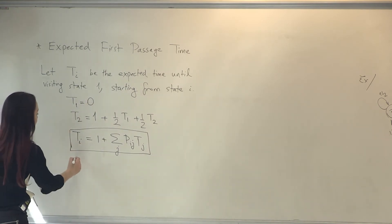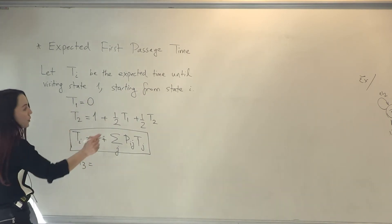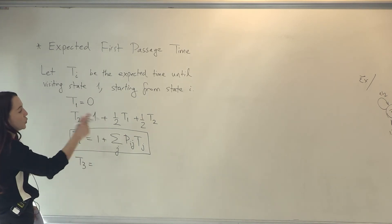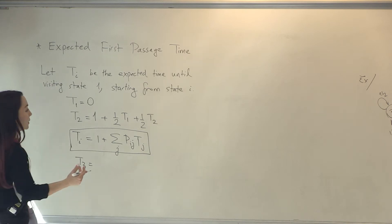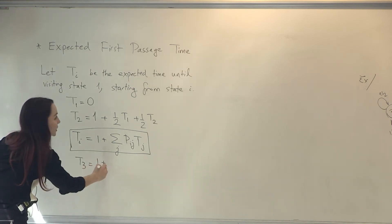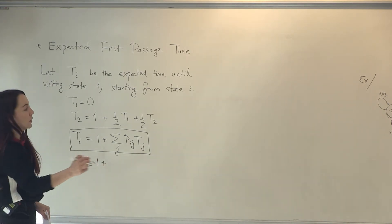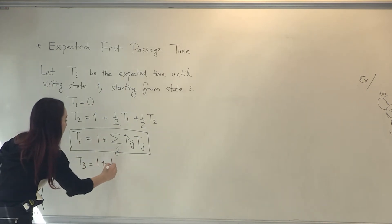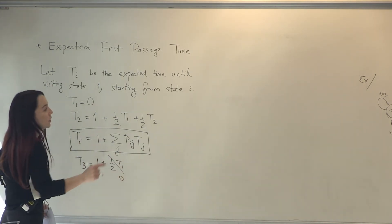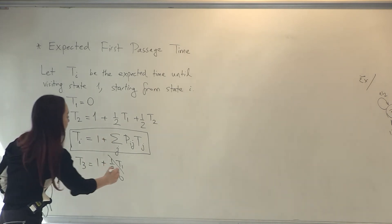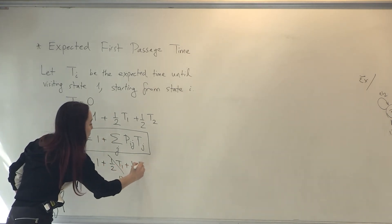For example, T3 in our example is equal to, you tell me, 1 plus 1 over 2 times T1, well that's 0, plus 1 over 2 times T2.